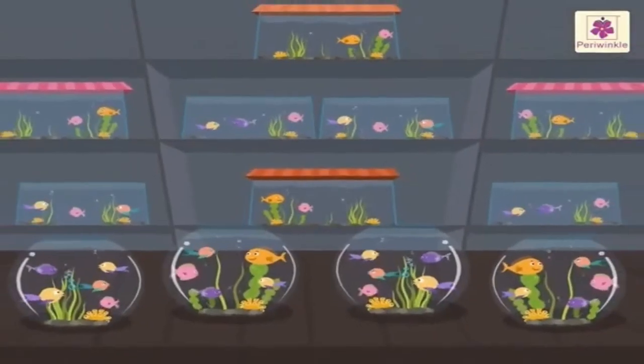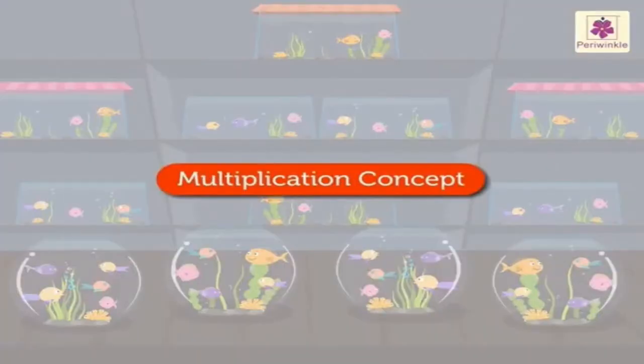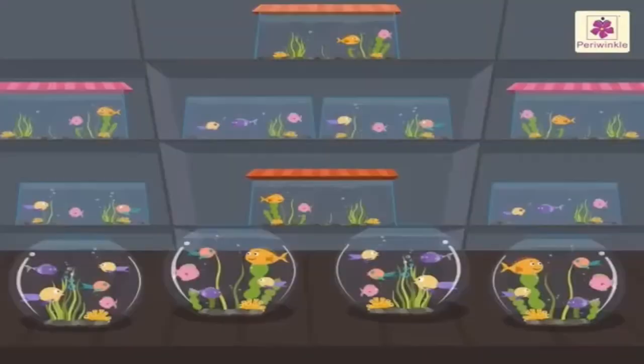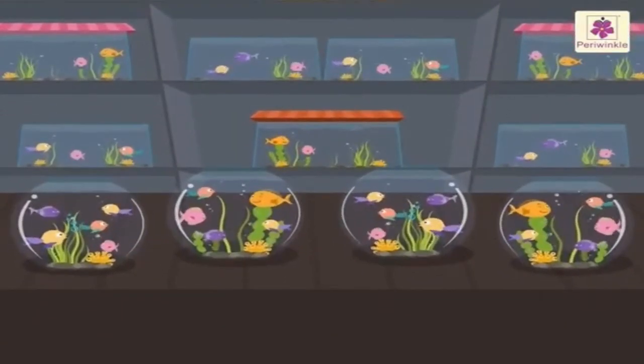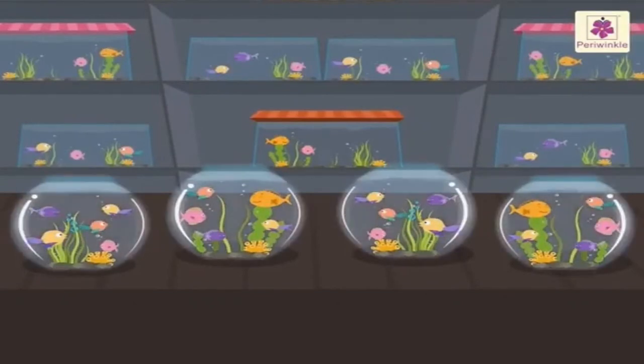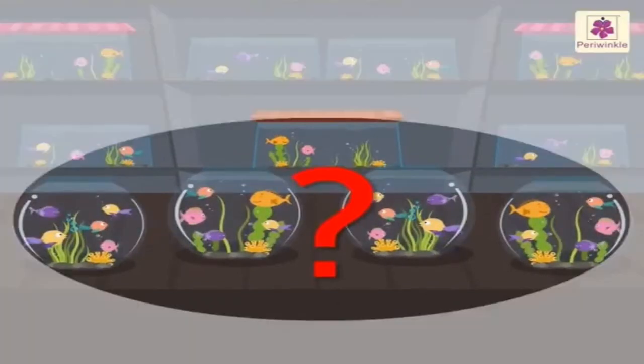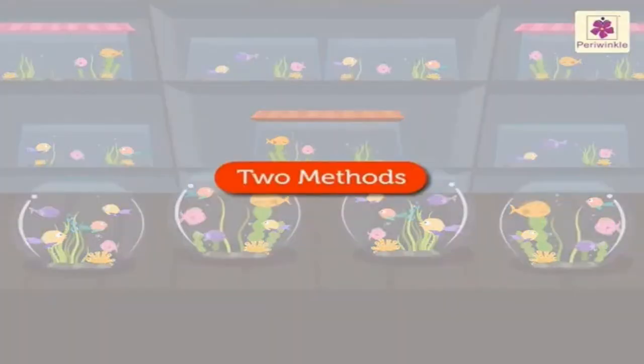Let us understand the multiplication concept with the help of these little fish. There are 5 fish in each bowl. There are 4 fish bowls. How many fish are there in all?